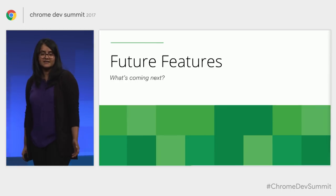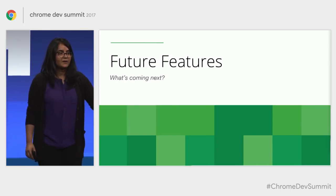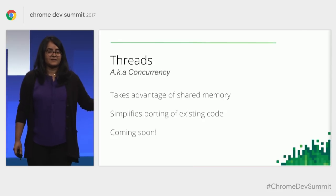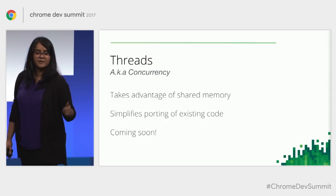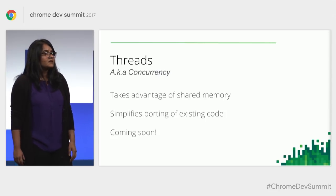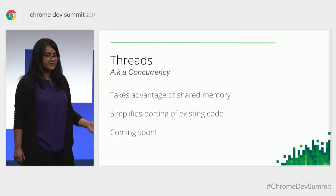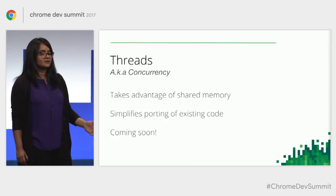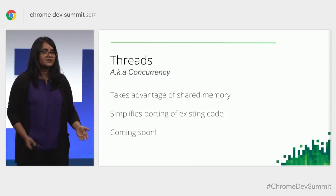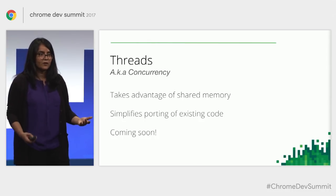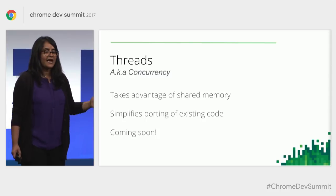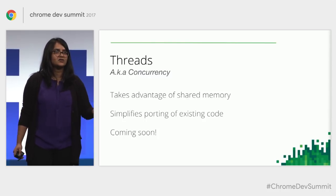We've heard about projects successfully using Wasm right now. Now let's talk about some really exciting things we're working on for the future. First up: threads. The threads proposal provides low-level building blocks for per-thread-style shared memory between threads — web workers in this case — and concurrency using atomics and futexes. A lot of existing native libraries extensively use threads, so adding threads to Wasm simplifies porting multi-threaded applications to the web. We should have something to try by end of year and launch in the first half of next year.